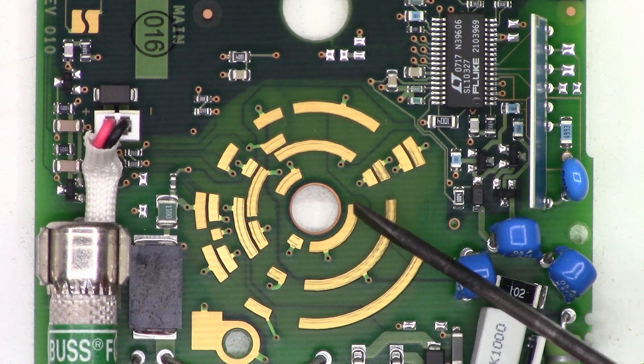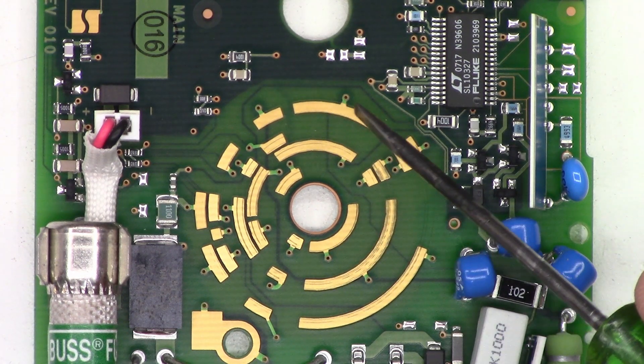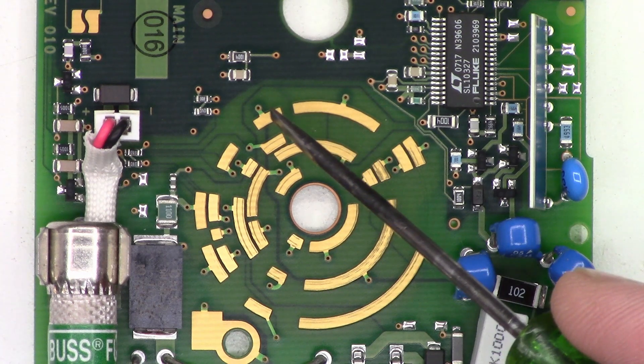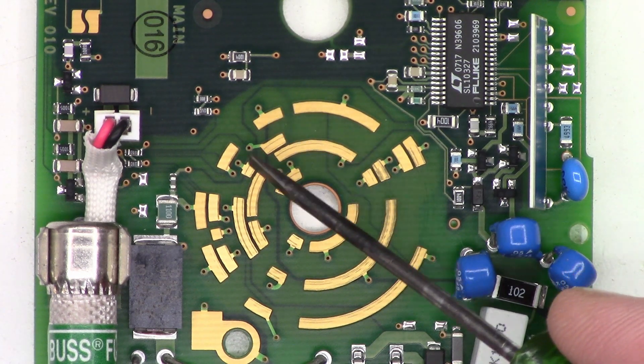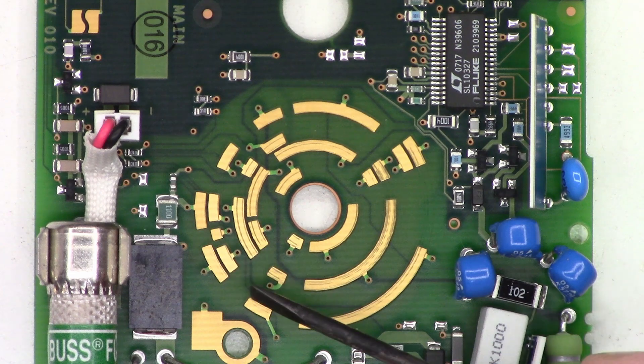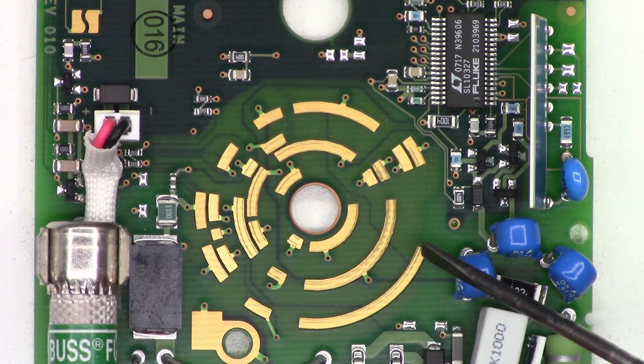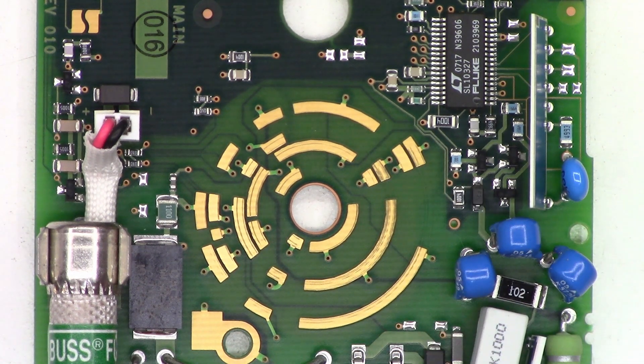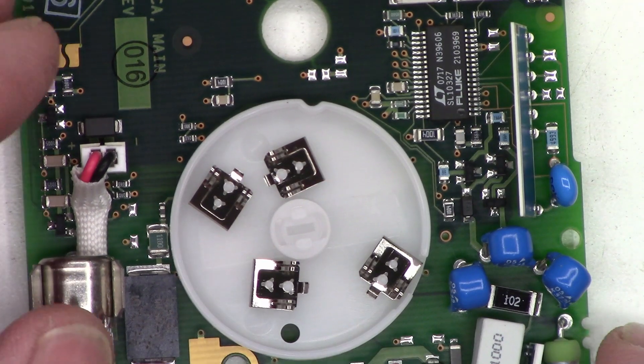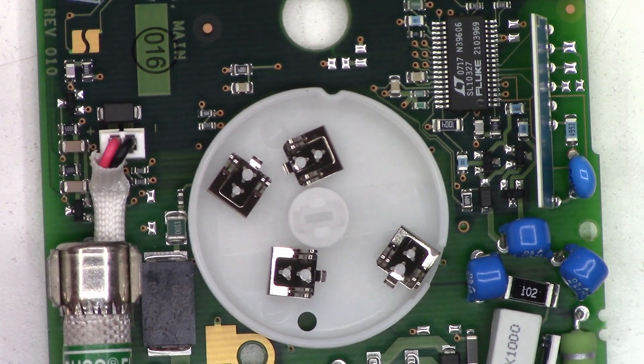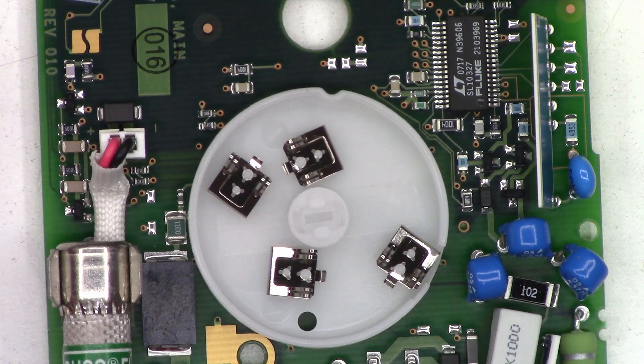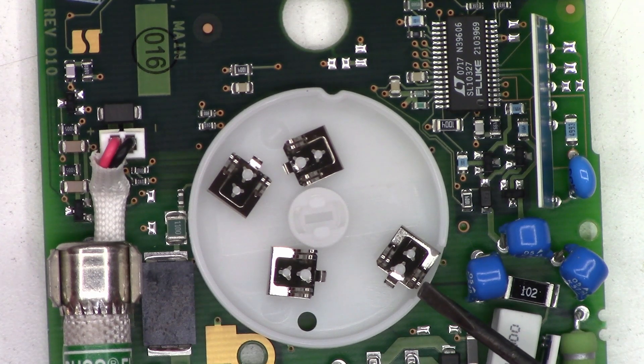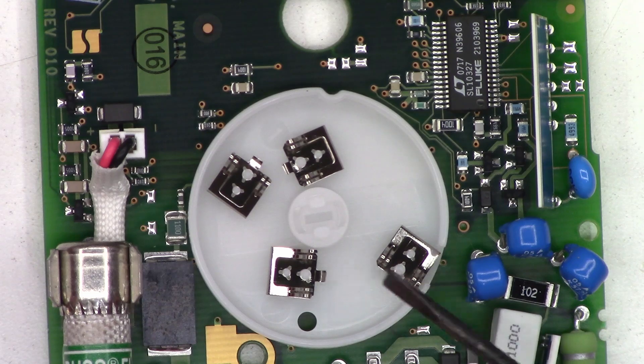I mean, they have to be there for some reason, right? They wouldn't just put these on the board and they never use them. So here's a look at the backside of the encoder. It just has four sets of sliding contacts, and I noticed that some of these are bent back. Maybe they're not making the best connection. They're all bent back a little bit.